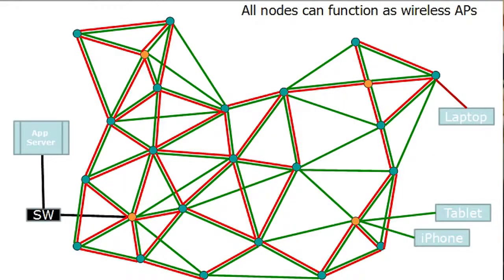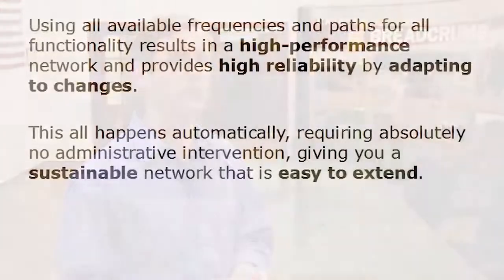As I mentioned, in a Rajant kinetic wireless mesh, all radios are available for all functionality. That doesn't include just mesh functionality, that also includes wireless access point functionality for clients. So laptops, tablets, phones, whatever, may associate with any node on the network if they're configured properly.